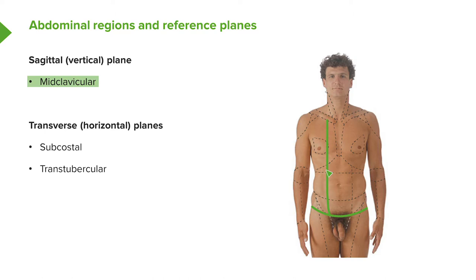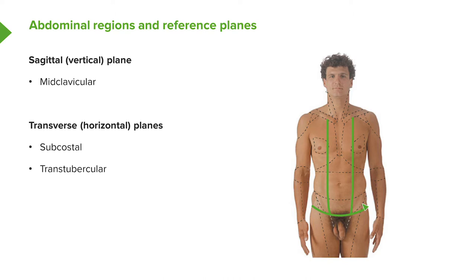We have one mid-clavicular line on the right side and another on the left side, and this divides the abdomen into three vertical bands. We can also look at two transverse or horizontal planes going across the abdomen — one known as the subcostal plane in line with the tenth costal cartilage, and another known as the trans-tubercular line. This now divides the surface of the abdomen into nine regions.